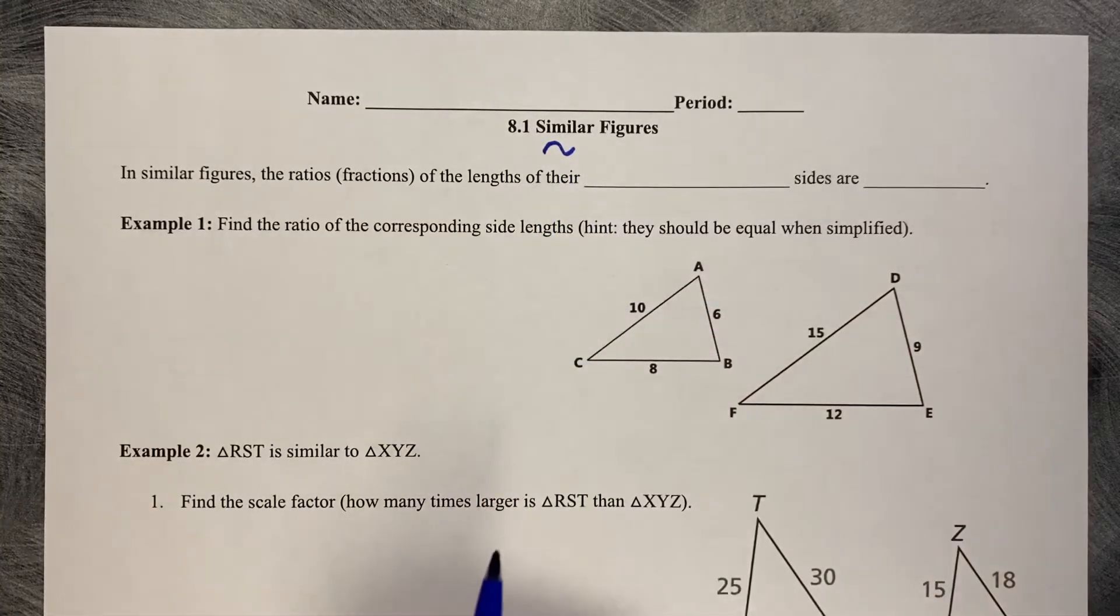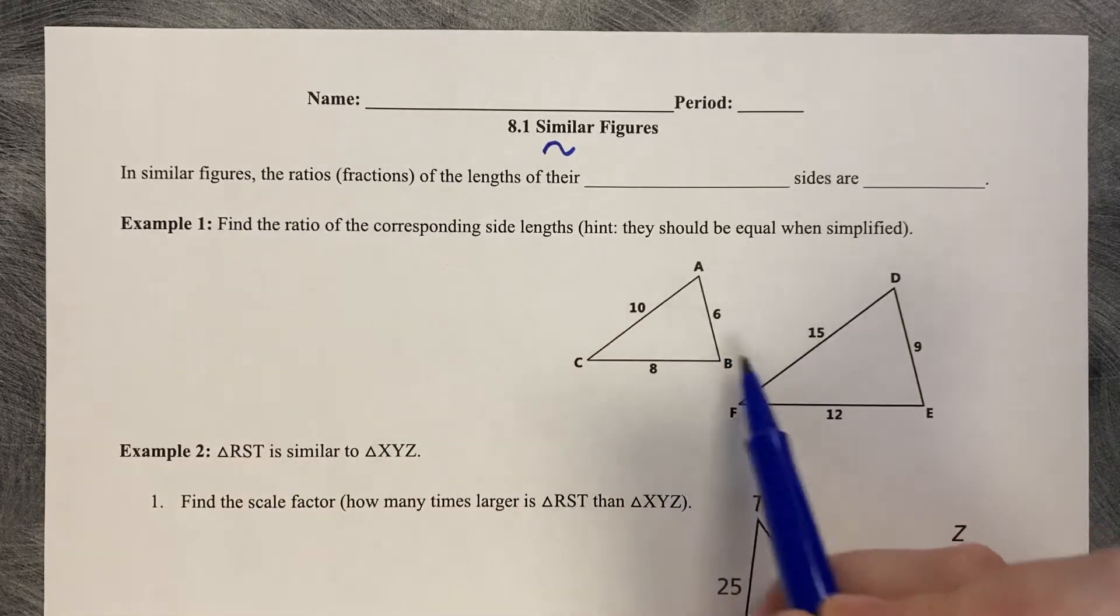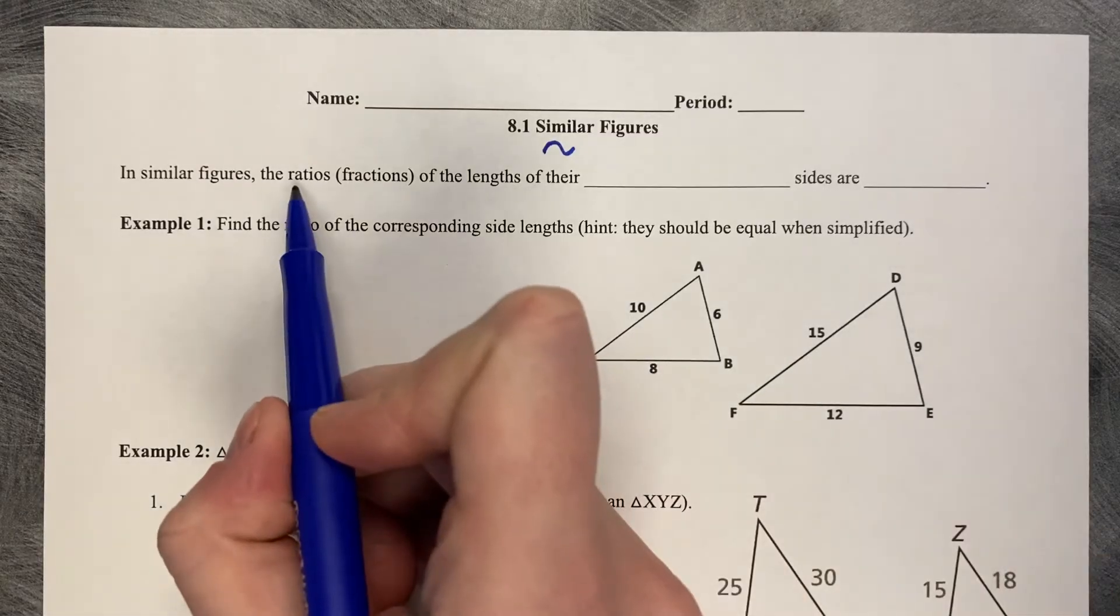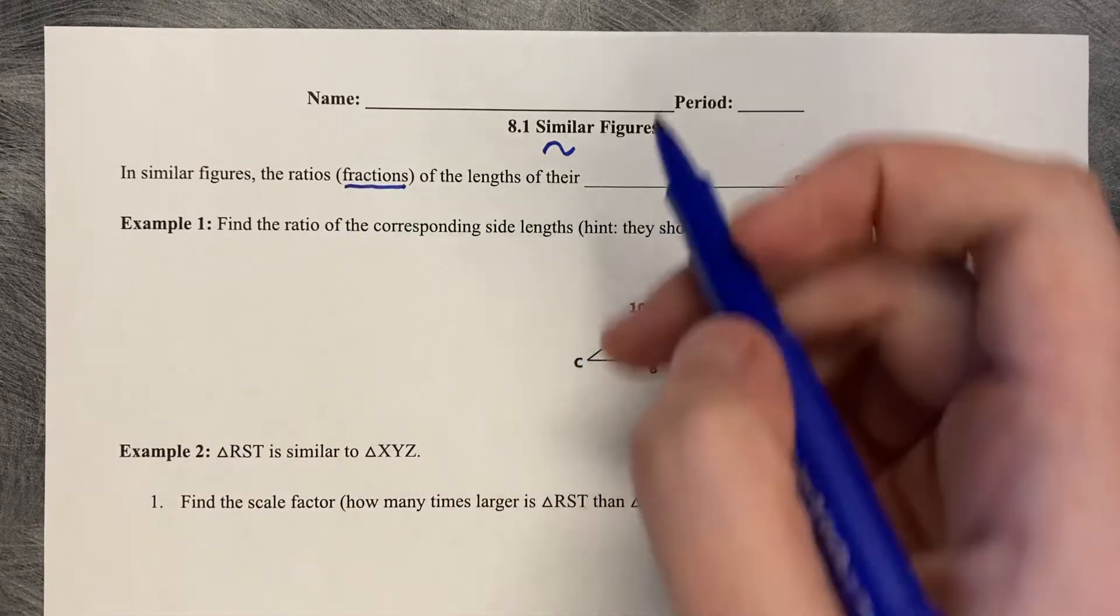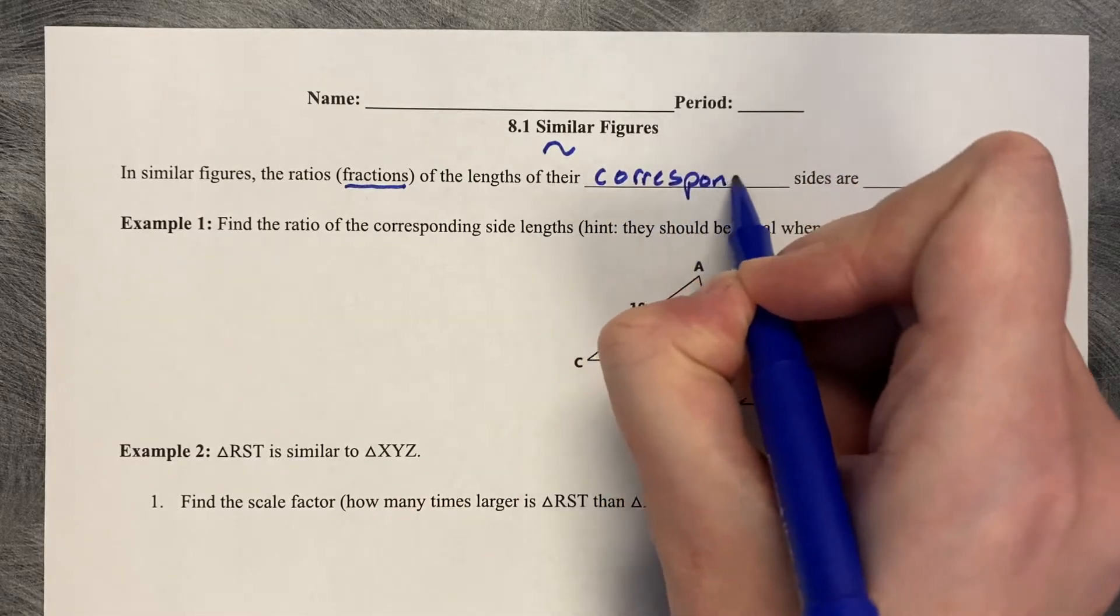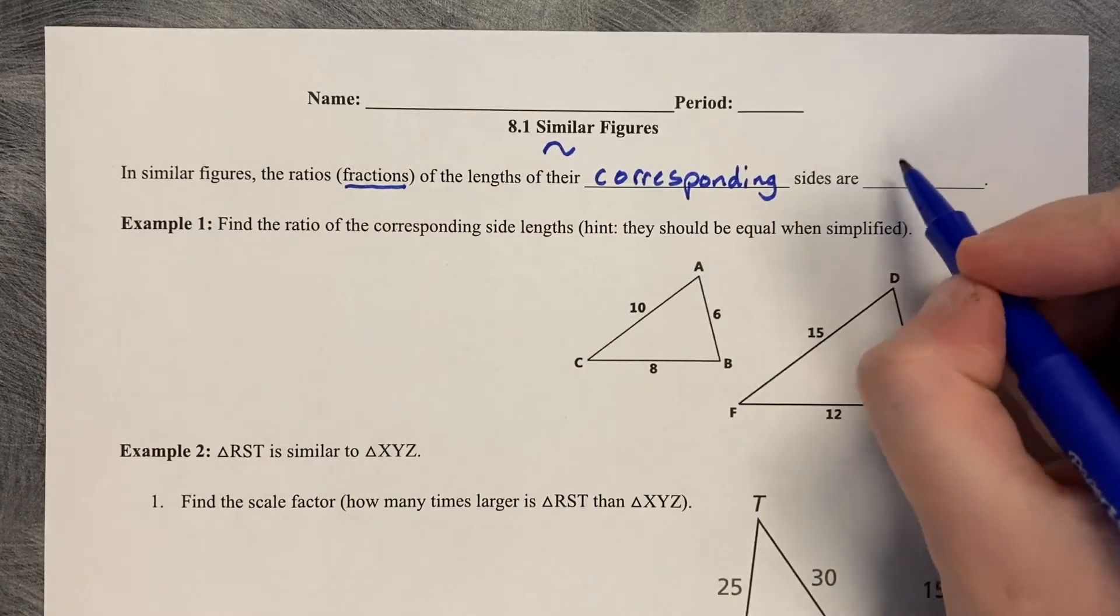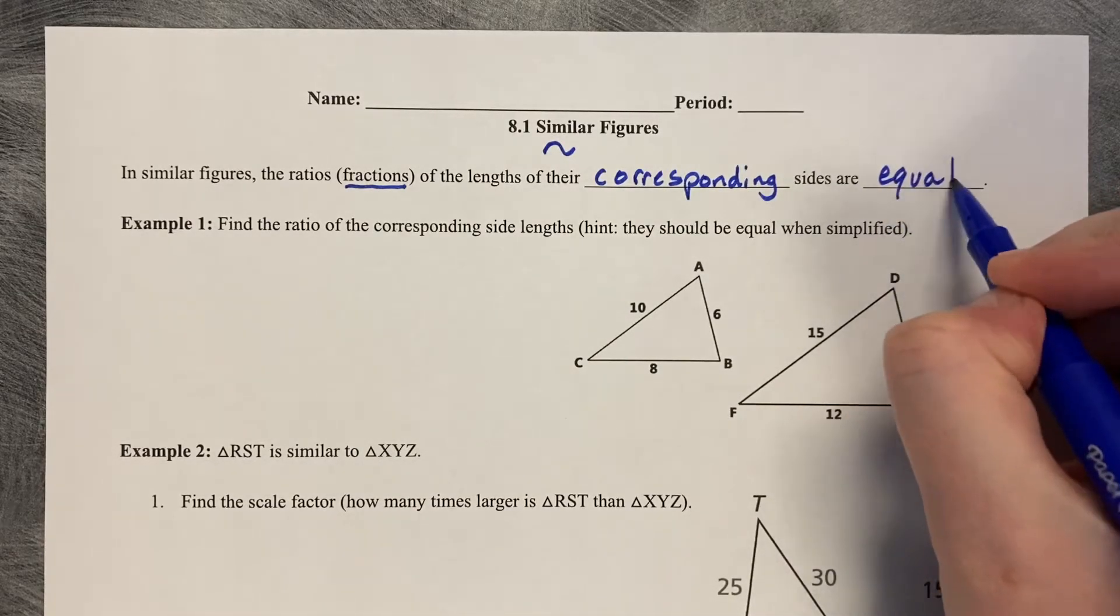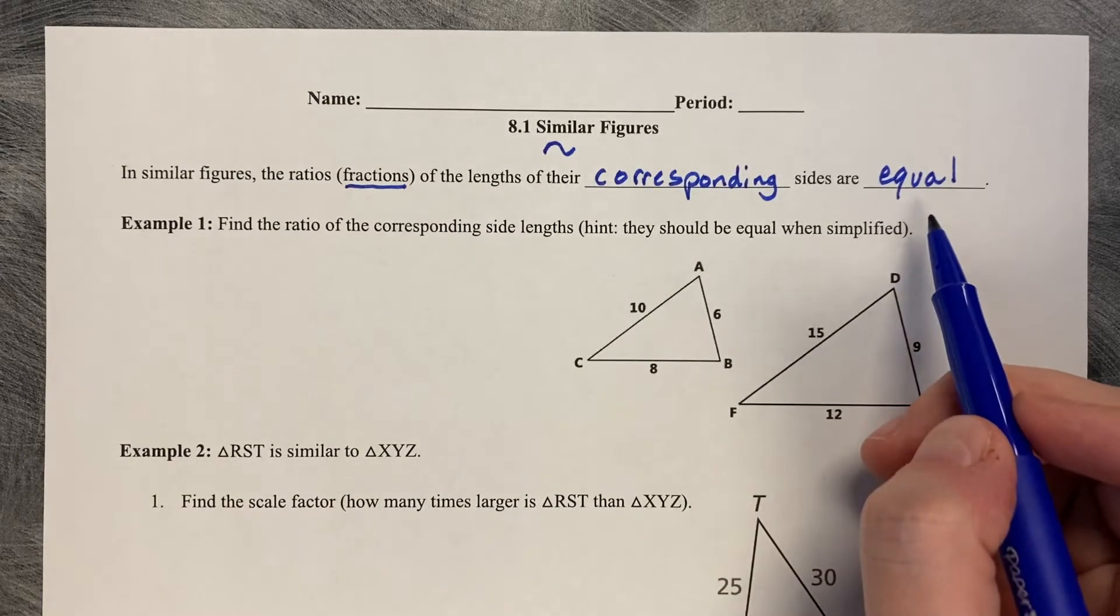So in similar figures, the ratios or the fractions of the lengths of their corresponding sides are equal. The fractions are equal, not the lengths themselves.